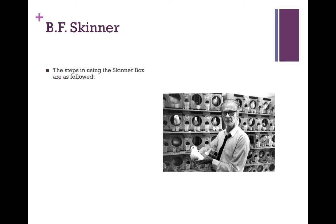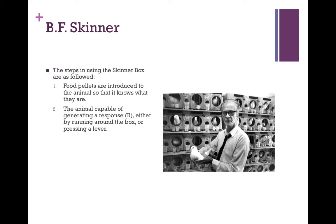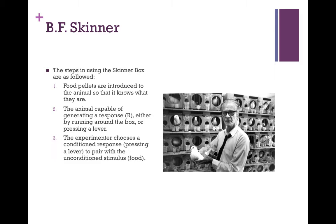The steps in using the Skinner box are as follows. One, food pellets are introduced to the animal so that it knows what they are. Two, the animal is capable of generating a response, either by running around the box or pressing a lever. Three, the experimenter chooses a conditioned response — pressing the lever — to pair with the unconditioned stimulus, which is the food.